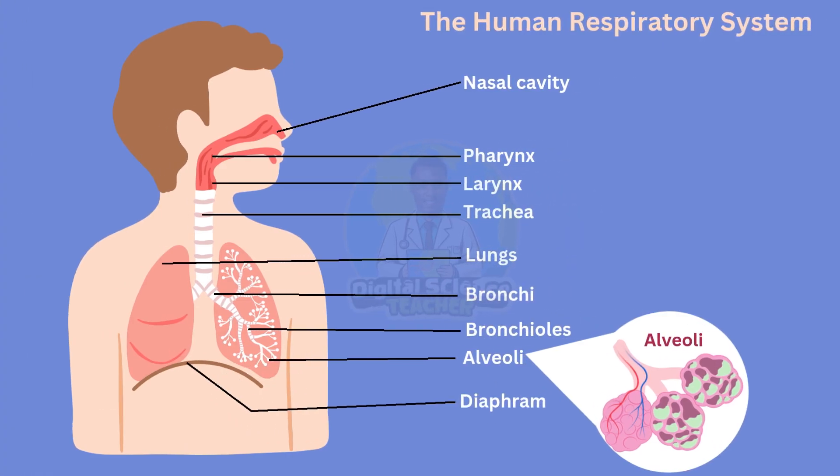The human respiratory system consists of the following parts or organs: the nose or nasal cavity, the pharynx, the larynx or voice box, the trachea or windpipe, the lungs, the bronchi, the bronchiolus, and the alveoli.